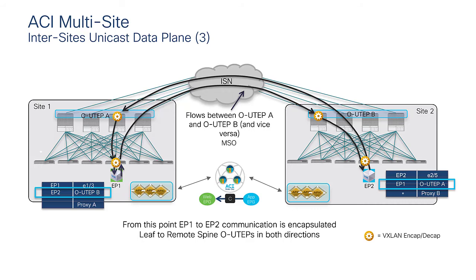From this point on, since leaf forwarding tables are populated with specific endpoint information from data plane communication, all communication between the two sites uses tunnels between the leaf and remote spine overlay unicast TEP addresses. Policy for normal EPG-to-EPG intra-VRF communication is always applied at ingress. For inter-VRF, PBR, or service graph scenarios, this may change.